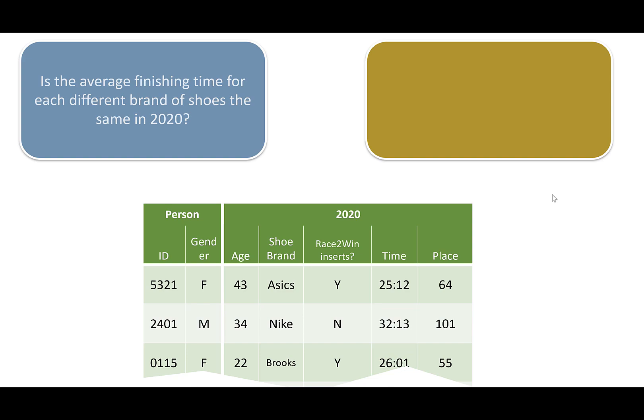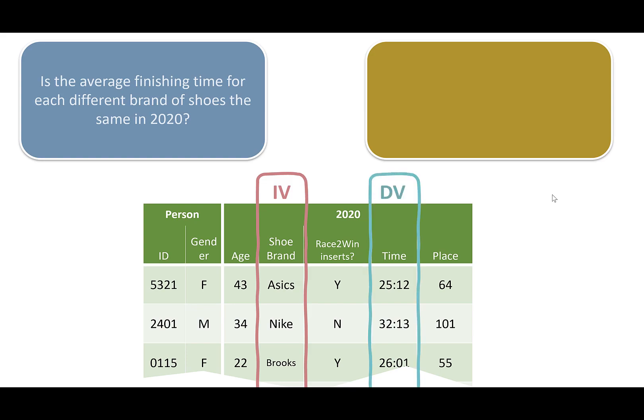What if we ask: is the finishing time the same for each different brand of shoes? Our independent variable changes to shoe brand, but the dependent variable is still time. The key difference is that shoe brand doesn't just have two levels — it has at least five: Asics, Nike, Brooks, Adidas, and New Balance. Since an independent samples t-test can only work for two levels, with three or more levels we need analysis of variance — ANOVA. This also makes a normality assumption: that the residuals are normally distributed.